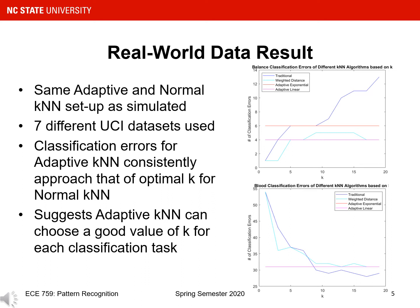Now I will detail the results for the real-world data obtained using seven different datasets from the UCI machine learning repository. I had the same experimental setup as for the simulated data, again keeping k-min at 3 and k-max at 19 for my adaptive KNN algorithms, while varying k from 1 to 19 for the normal KNN algorithms. Classification errors for my adaptive KNN algorithms consistently approach that of the optimal k-values for the normal KNN algorithms. For some datasets, the normal KNN algorithms had fewer classification errors at lower k-values, while for others they had fewer at larger k-values. My adaptive KNN algorithms always had a classification error close to the minimum number of classification errors obtained at the best normal KNN algorithm result.